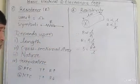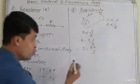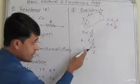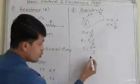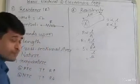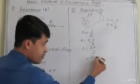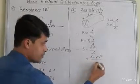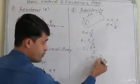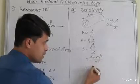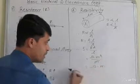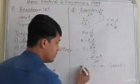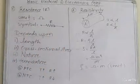Now we will find the unit for resistivity. Resistance is measured in ohm, area is measured in meter squared, and length is measured in meter. So it is equal to ohm times meter squared upon meter — the meter cancels — giving ohm·meter. This is the unit of resistivity.